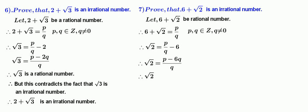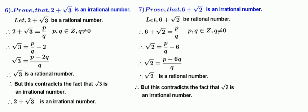Therefore, root 2 is a rational number because P minus 6Q by Q is a rational number. But this contradicts the fact that root 2 is an irrational number. Therefore, 6 plus root 2 is an irrational number.